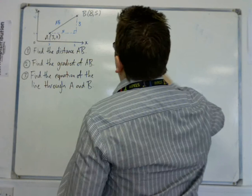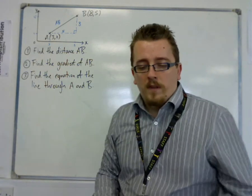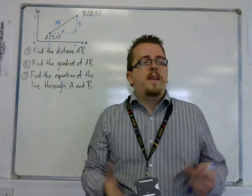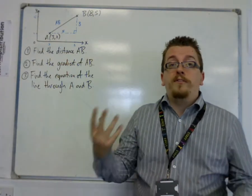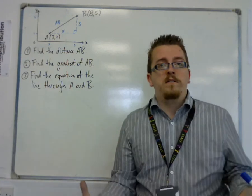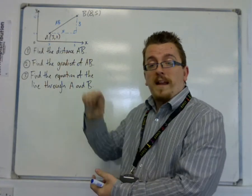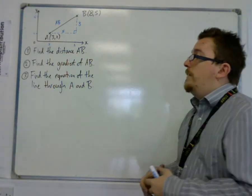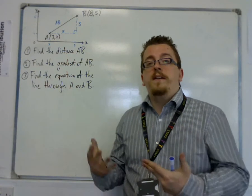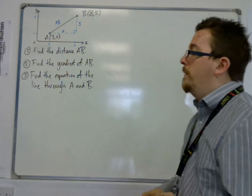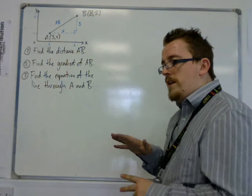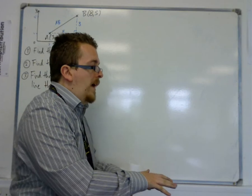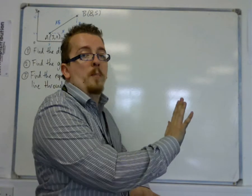The next part is find the gradient of AB. Now, what do we mean by gradient? Well, if we say we have a road that has a steep gradient, it has a steep incline. It's going up at a steep angle. So the gradient is a measure of how steep the line actually is. And we measure that by thinking about, for every one I go along, how much do I go up?